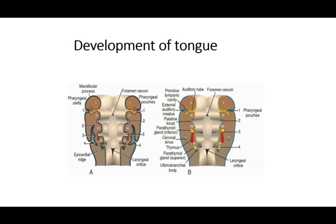The area we are going to talk about is roughly at the level of the foramen cecum — between the junction of the first and second arches, at the floor of the pharyngeal apparatus. This is where we will discuss the formation of the tongue and the thyroid gland.